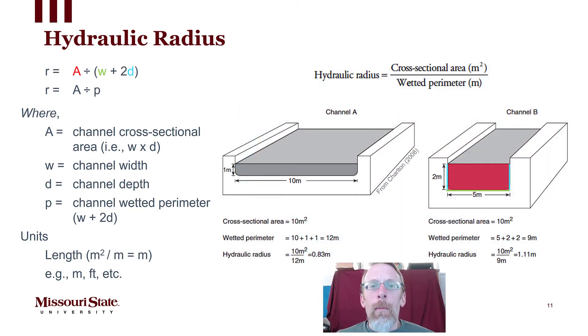Okay, so we mentioned hydraulic radius earlier. Let's come back to that for a second and explain what it is. First of all we need to take the area of our channel. In our diagram on the right here, our area is the red rectangle. The area for this channel would be, since it's a rectangle, it's relatively easy to calculate. The area would be 2 meters deep by 5 meters wide, which would be 10 square meters for our cross-sectional area.